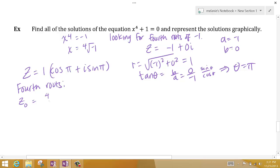The 4th root of 1 times cosine of pi plus 2 pi k over 4, plus i sine of pi plus 2 pi k over 4. This is z sub k.